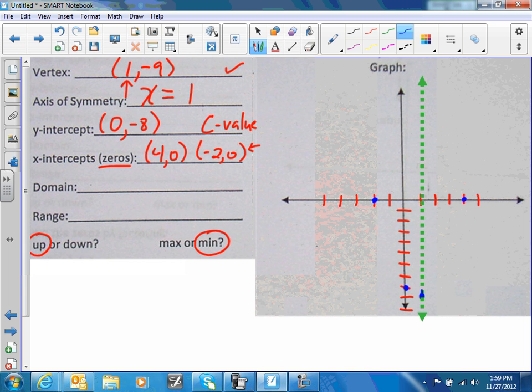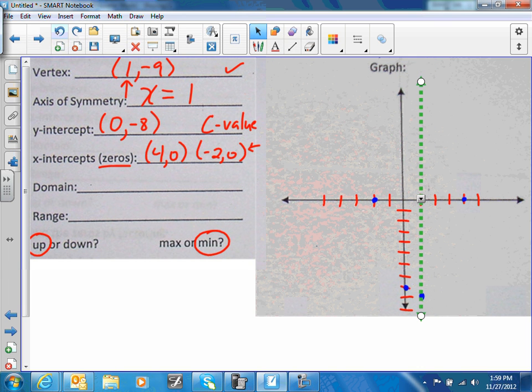There's our axis of symmetry. Remember, if this goes up one and to the left one, I can also go up one to the right one, and there's another point right there. This is symmetrical, so if it's one this way, it's also one that way.